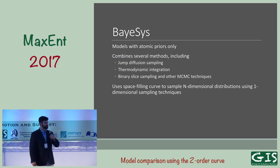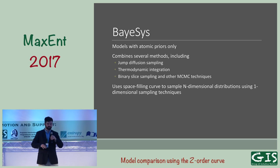BASIS works with atomic priors only. Unlike reversible jump MCMC, you can't do a generalized all-models-at-once approach — it needs to be atomic. It combines several methods for carrying out the model comparison calculations. At the heart, it uses jump diffusion sampling, which allows it to add atoms in the atomic models, delete atoms, or sample within them.